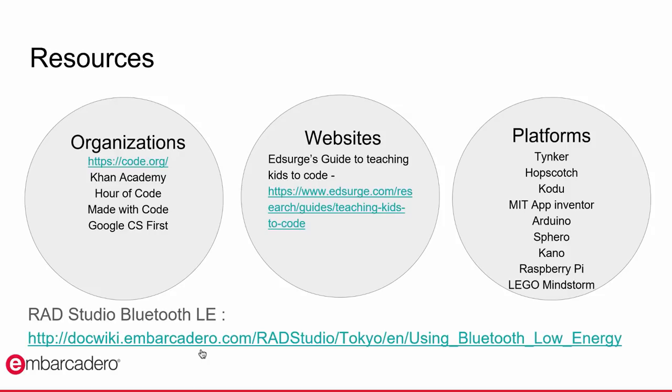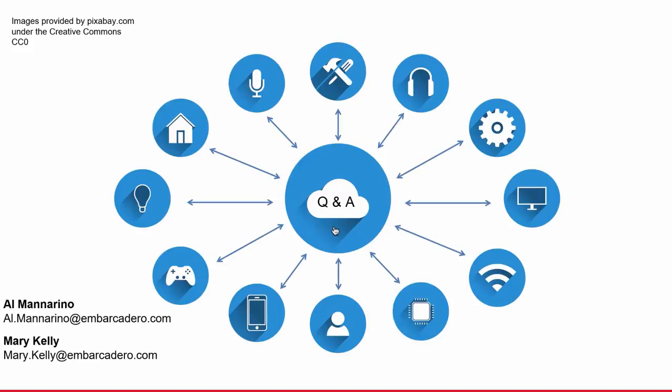For additional resources to help get kids coding: at the organization level, take a look at Code.org — a non-profit dedicated to expanding access to computer science in schools. Also check out the EdSurge Guide site dedicated to teaching kids to code. Platforms to help get your kids excited about coding include Tinker, Hopscotch, Arduino, Raspberry Pi, and Lego Mindstorm — which has building sets for teaching STEM and computer science. Take a look at the RAD Studio doc wiki for Bluetooth LE support with detailed information on implementing Bluetooth LE for standard services. This ends the Get Kids Coding webinar — let's now open it up to questions.